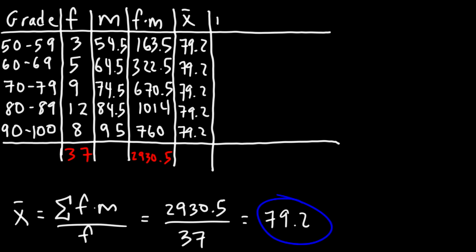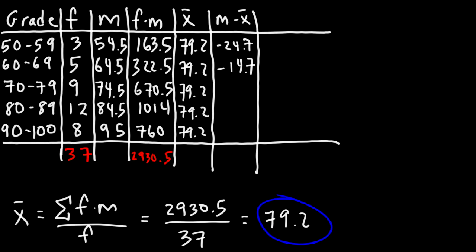For the next column, we take the difference between each midpoint and the mean (x̄ = 79.2). So: 54.5 minus 79.2 equals negative 24.7; 64.5 minus 79.2 equals negative 14.7; 74.5 minus 79.2 equals negative 4.7; 84.5 minus 79.2 equals positive 5.3; and 95 minus 79.2 equals 15.8.